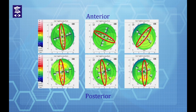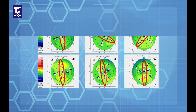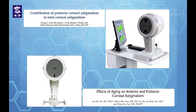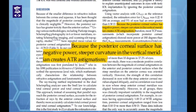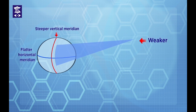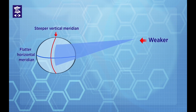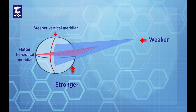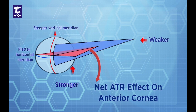It is evident in these topographies that irrespective of the anterior astigmatism being vertical, horizontal, or oblique, the posterior astigmatism is consistently oriented vertically — a finding observed by various authors using different tomographic devices. According to the explanation provided in literature, since the posterior surface is a negative lens, it subtracts more power from the steeper vertical meridian, making it weaker and relatively increasing power in the flatter horizontal meridian, thereby creating a net against-the-rule effect.